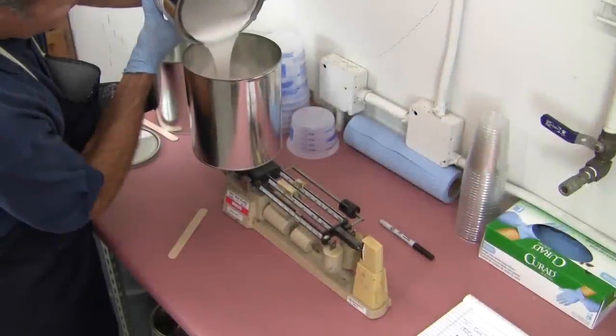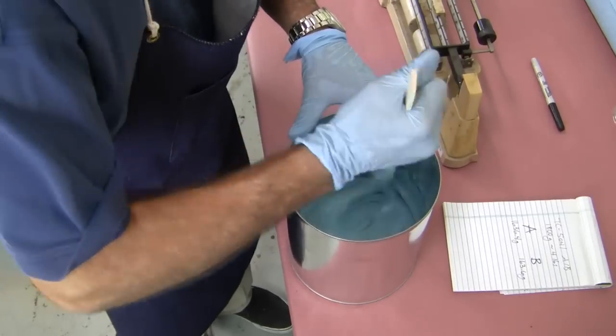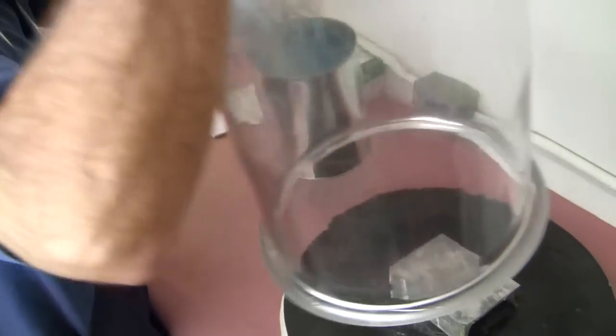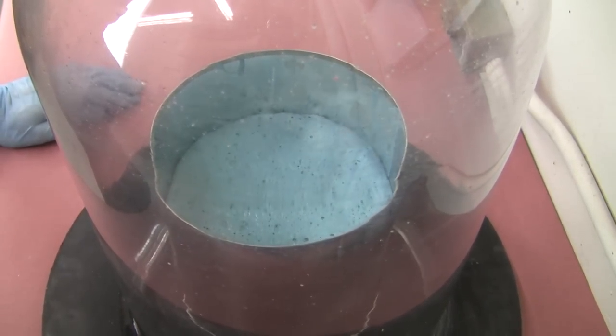It's time to measure out our two-part silicone material. Watch our intro mold making video for more details on measuring and mixing molding silicone. Pulling a vacuum on the mixture ensures the extraction of a majority of air bubbles.